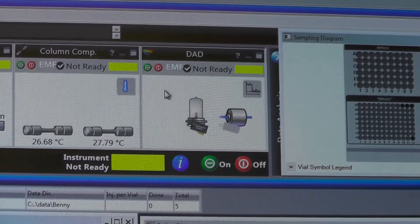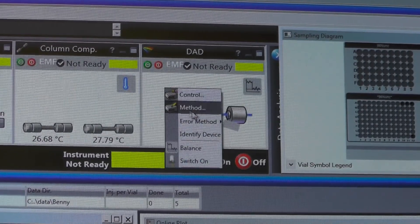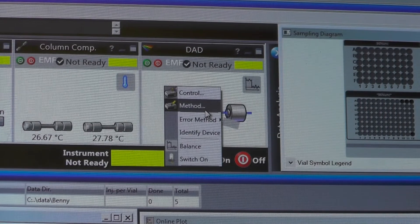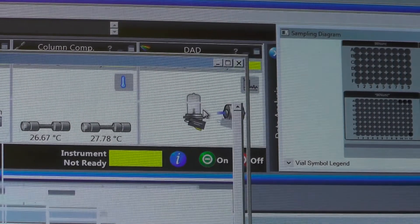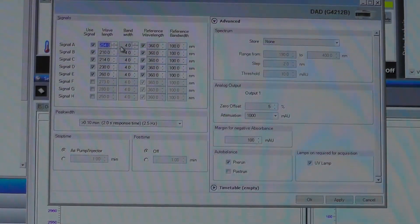If you need to change the wavelength of the DAD detector, right-click on the DAD icon and select Method. If not, you can skip this step.